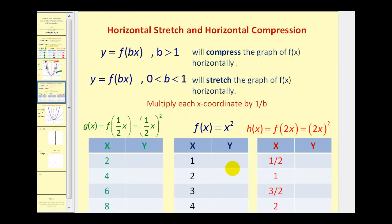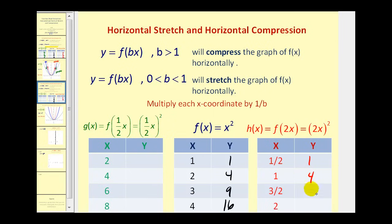Let's compare t-tables for f of x, f of two x, and f of one-half x. For f of x equals x squared, we already know the y values are one, four, nine, and sixteen. For f of two x, we're multiplying x by two before squaring. Notice when b equals two, we leave the y coordinates the same and multiply the original x coordinates by one over b, or just divide by b, giving x values of one-half, one, three-halves, and two.